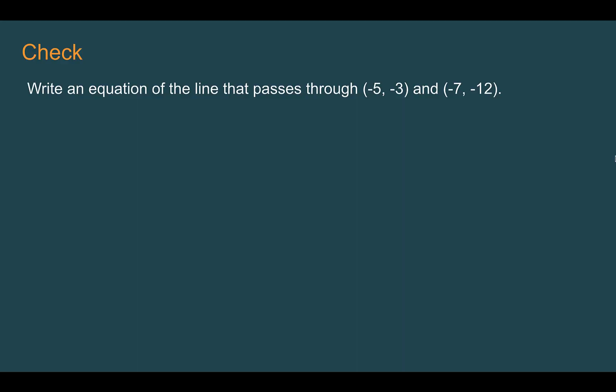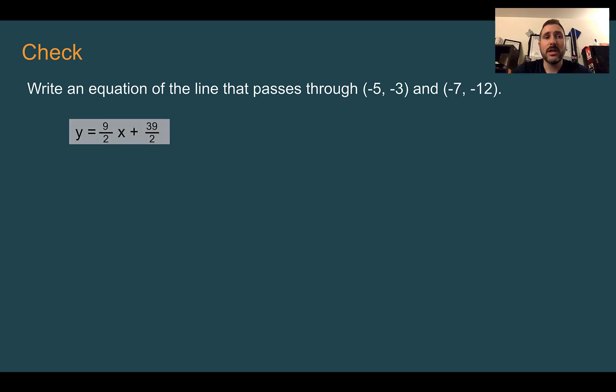Check your understanding. What is the equation of the line that goes through (negative 5, 3) and (negative 7, negative 12)? You may use Desmos if you wish. Pause the video now and complete the check. Check your answer. You should have said that your equation is y equals 9/2 x plus 39/2, or if you changed it to decimals, 4.5x plus 19.5.